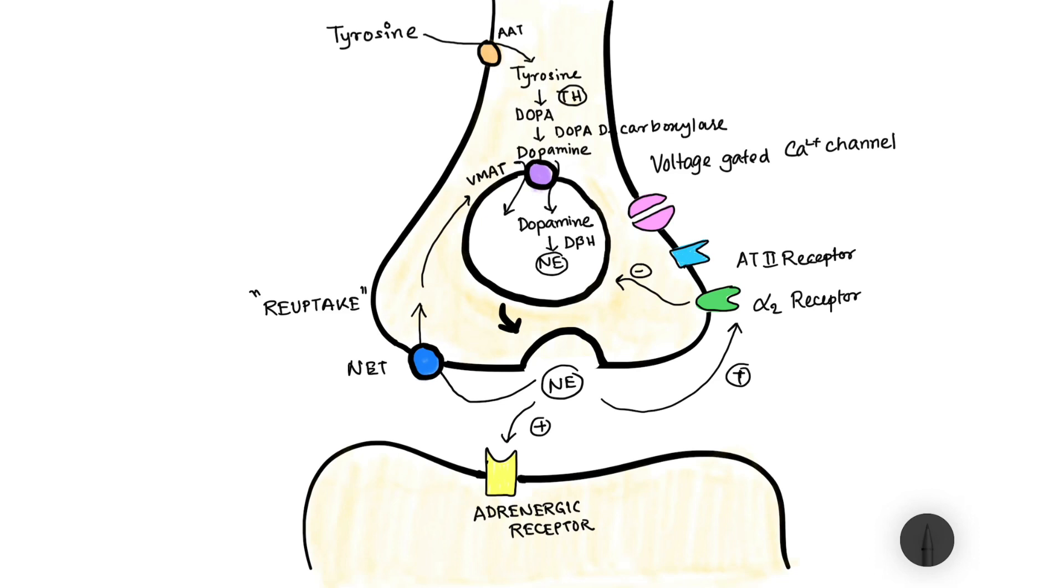The angiotensin 2 receptor on the presynaptic membrane imparts a positive role in release of this norepinephrine and the voltage-gated calcium channels cause an influx of calcium ions from the extracellular matrix into the neurons and this calcium plays a positive or stimulatory role in release of norepinephrine.